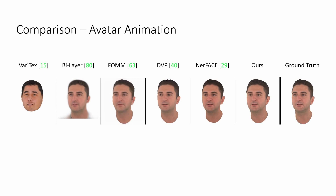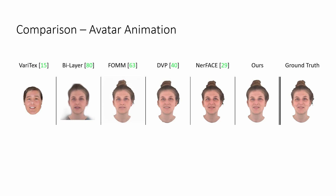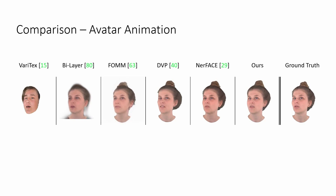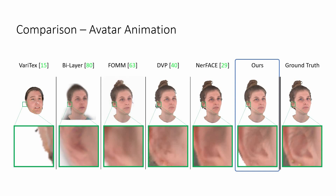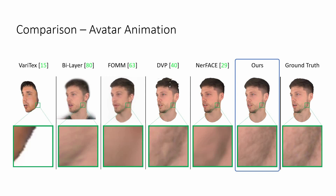We compare our method against state-of-the-art approaches for face and head animation. In terms of quality, the one-shot methods VariTex, BiLayer, and First-Order Motion Model either suffer from identity variations or deforming geometry for larger head rotations. Deep Video Portraits and NeRF Face are more robust in that respect, but still show large visible artefacts or lack of sharpness. In contrast, our avatars exhibit strong identity preservation, consistent geometry, and the sharpest texture details across all sequences among the competitors.